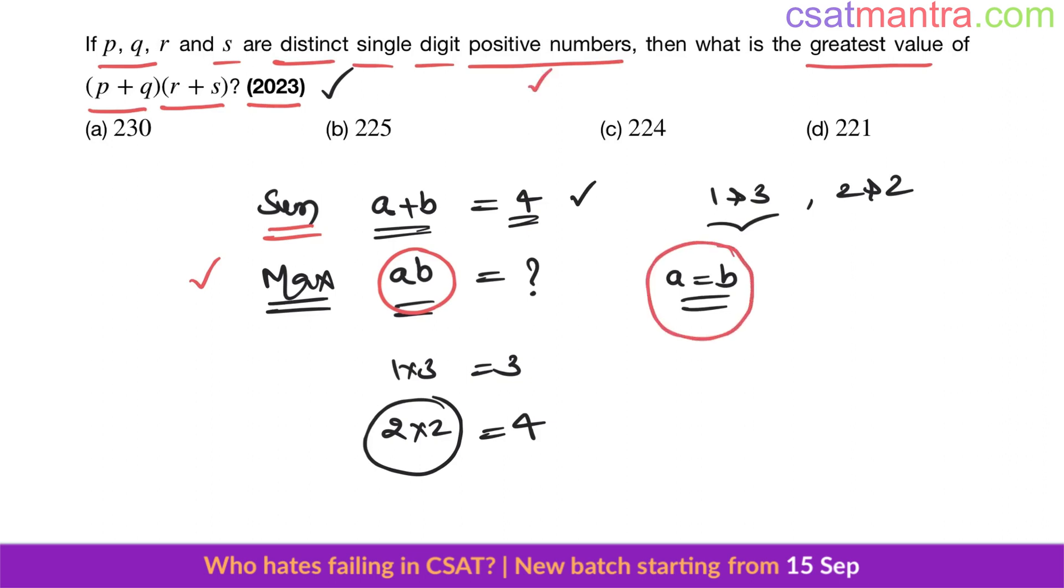In this problem, sum is not given, but we are asked about product. Maximum value of the product. This would be maximum when p plus q equals r plus s. This would be p plus q into r plus s, which is p plus q again. So this is (p+q) whole square. Our answer should be a perfect square.